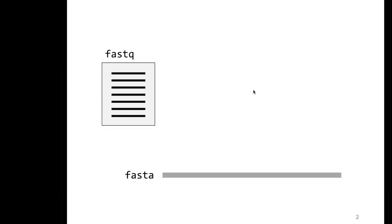You have a FASTQ file, either raw or trimmed, and then you usually have a reference genome. The quality of that reference depends on the organism. For human, mouse, Arabidopsis, or Drosophila, you can expect relatively high quality, though there are always gaps. For other organisms with only a basic assembly, you'd have a less complete reference genome, which has implications for read alignment and downstream analysis.